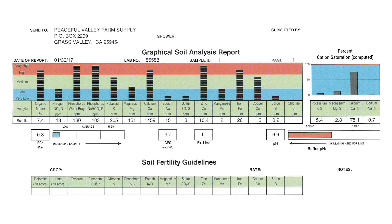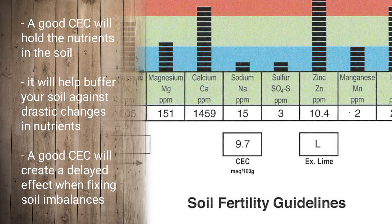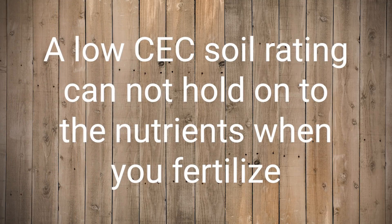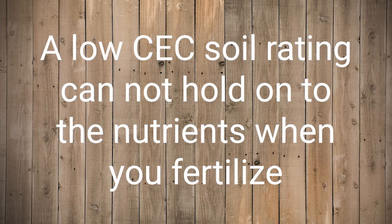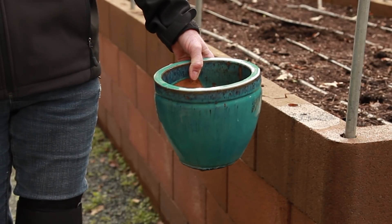When looking at your nutrient levels and deciding how much fertilizer to add, consider your CEC level. A good CEC will hold the nutrients in the soil so your plants can use them over an extended period of time. It will also buffer your soil against changes in nutrients, so you will see a slow, delayed effect when trying to correct any imbalances. On the other hand, a low CEC soil cannot hold onto the nutrients when you fertilize. Whatever your plants do not quickly use will be leached out of the soil like pouring fertilizers into a leaky bucket.